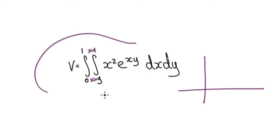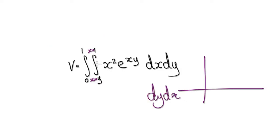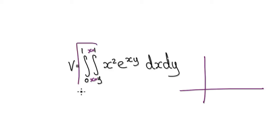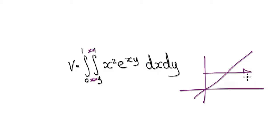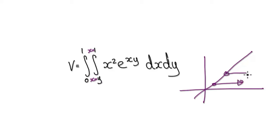Currently, we're just trying to understand the situation. Later on, we will make the switch to dy and then dx. Let's just draw the line y equals x. Currently, we're moving along parallel to the x axis, from the diagonal line, and then we stop at x equals 1.